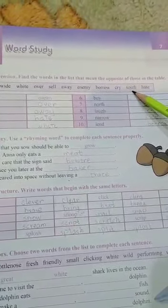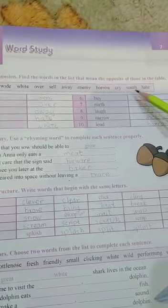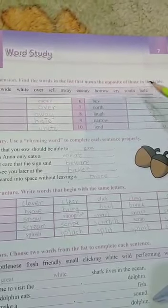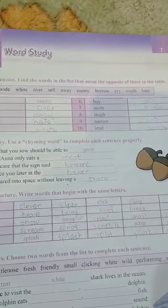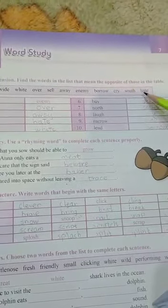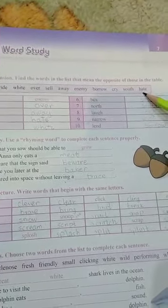Cry means shout. South is a direction, southern area. South, north, east, west. Hate means when you don't like someone, when you dislike someone, that is hate.